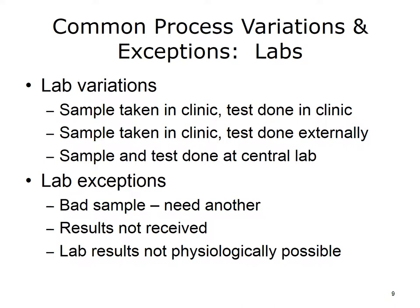Common lab variations include sample taken in clinic and test done in clinic, sample taken in clinic with test done externally, and sample and test done at central lab. Lab exceptions include bad sample requiring another blood draw, lab results not received, and lab results not physiologically possible.